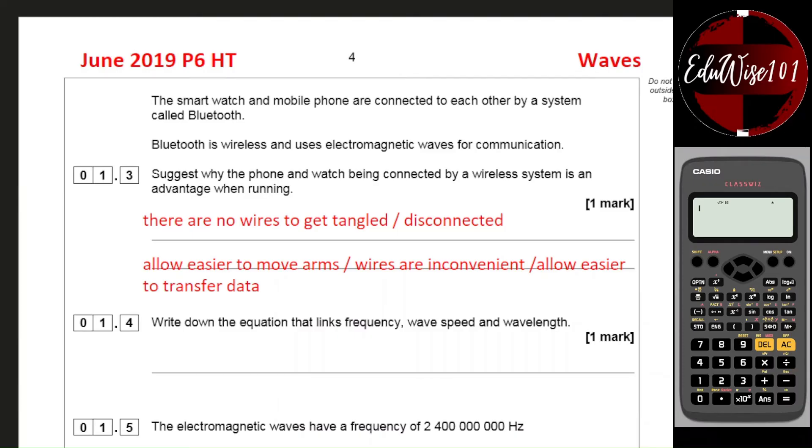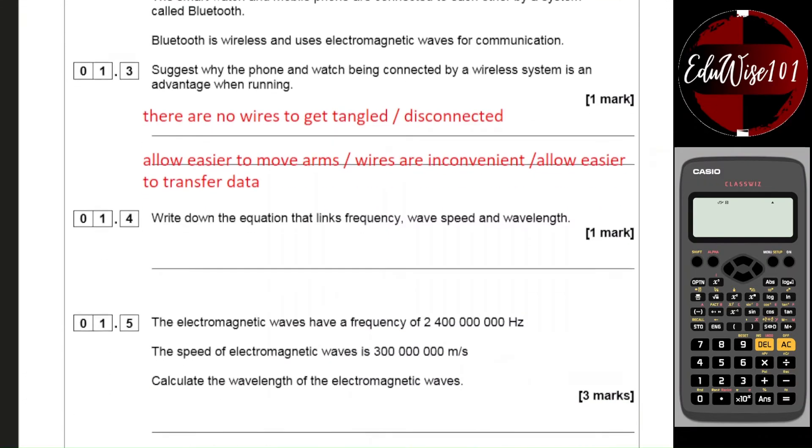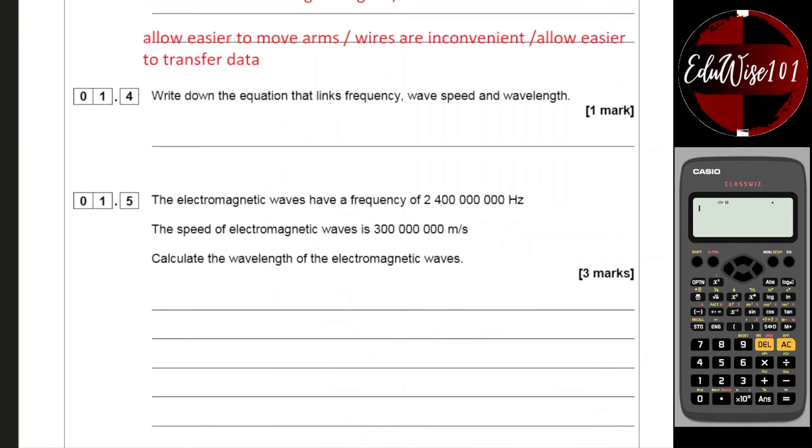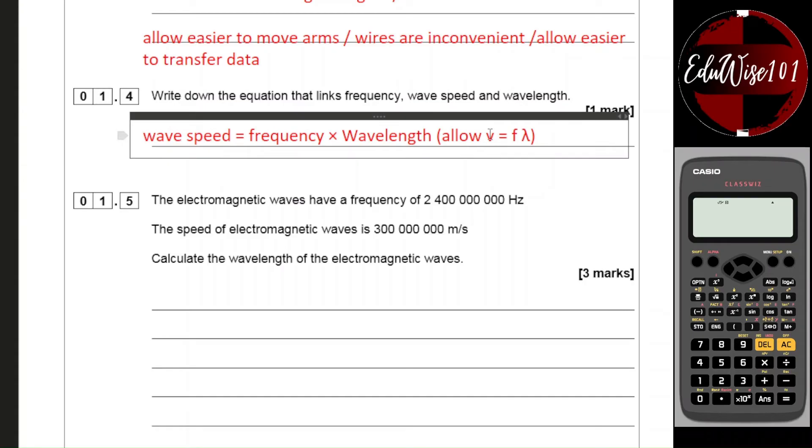Question 1.4: write down the equation that links frequency, wave speed and wavelength. Now you can refer to the equation sheet to find this equation. You can write it as a word equation or as a symbol equation. So wave speed equals frequency multiplied by the wavelength, or you could use v equals f lambda, where v is the wave speed, f is for frequency, and lambda is for wavelength.